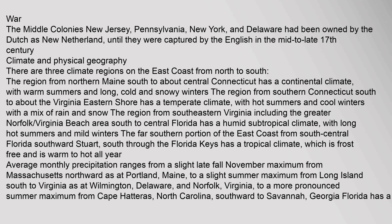There are three climate regions on the east coast from north to south. The region from northern Maine south to about central Connecticut has a continental climate, with warm summers and long, cold and snowy winters. The region from southern Connecticut south to about the Virginia eastern shore has a temperate climate, with hot summers and cool winters with a mix of rain and snow. The region from southeastern Virginia, including the greater Norfolk, Virginia Beach area, south to central Florida has a humid subtropical climate, with long hot summers and mild winters.